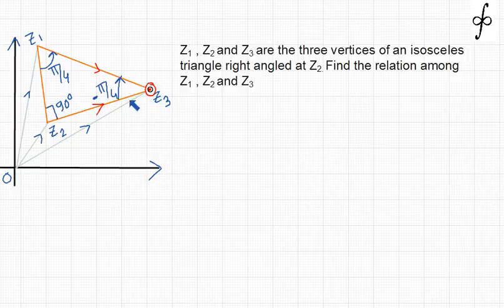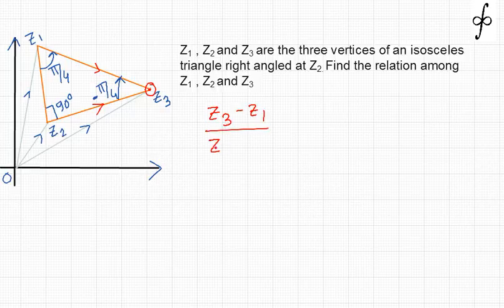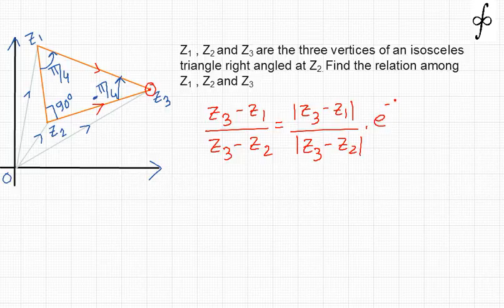Considering Z3 as the pivotal point with clockwise rotation, this will be the initial position and this will be the final position. We write the rotation statement as: (Z3 − Z1) / (Z3 − Z2) = |Z3 − Z2| · e^(−iπ/4), because the rotation is in the clockwise sense, so the angle is taken as −π/4.